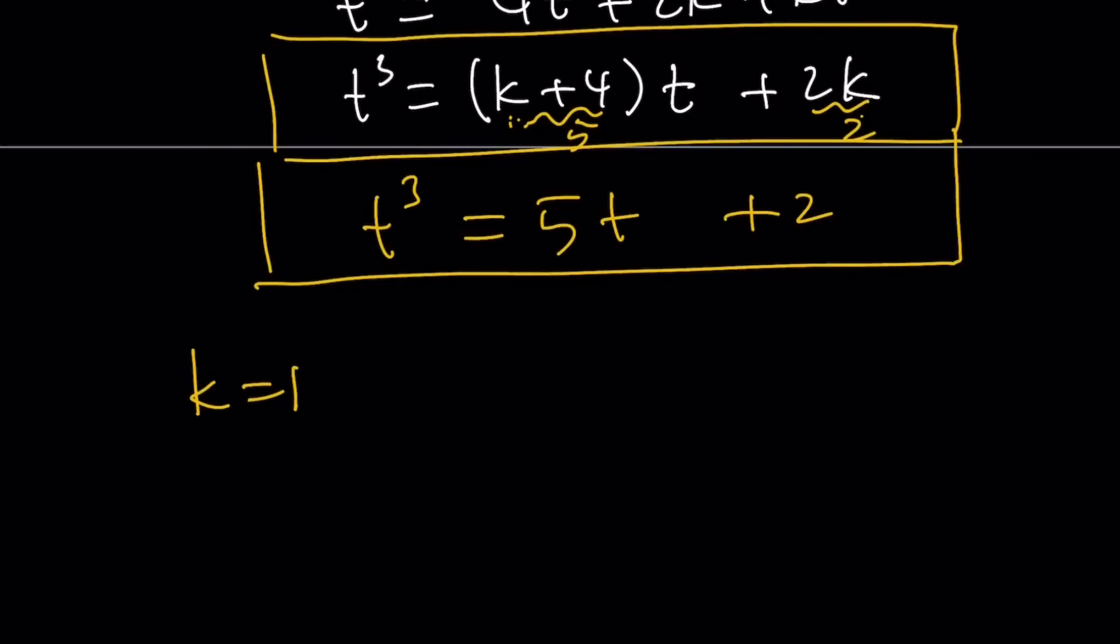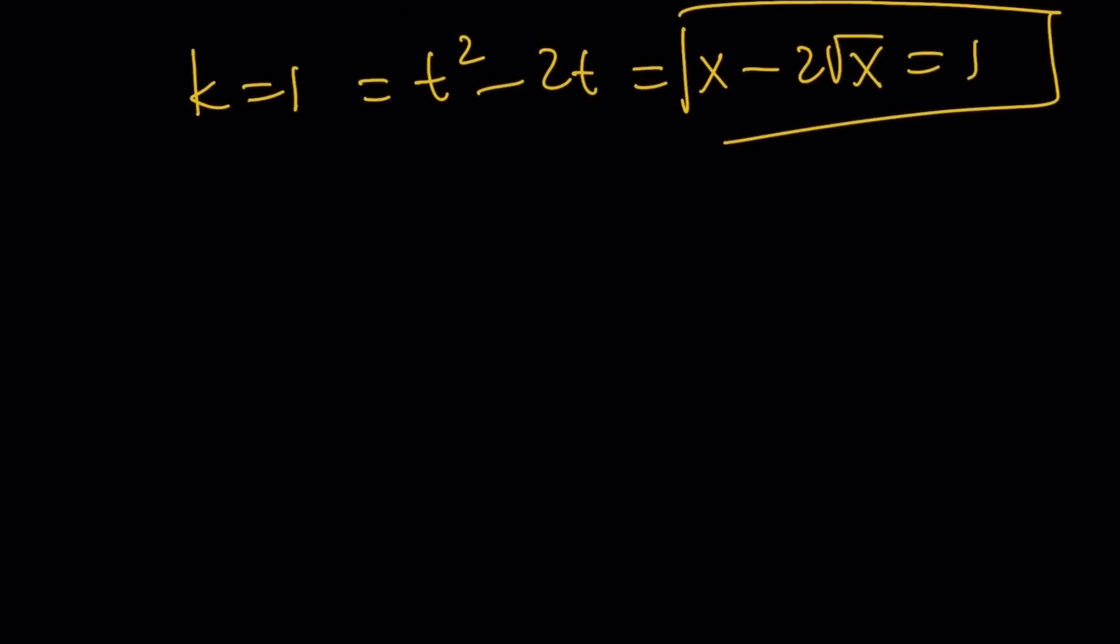What is k? k is t squared minus 2t, which is equal to x minus 2 times the square root of x. Therefore, we got the value we are looking for. Let's go ahead and take a look at the second method.